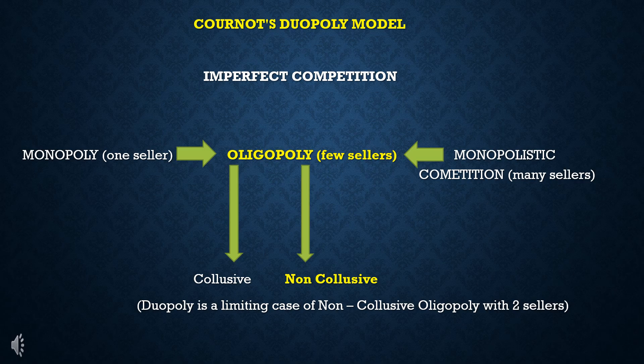Monopoly has only a single seller, while monopolistic competition is a market structure with many sellers. Duopoly is a limiting case of Oligopoly with only two sellers — 'dio' means two. Such a model is Cournot's Duopoly model.